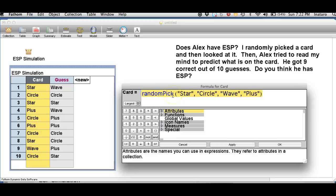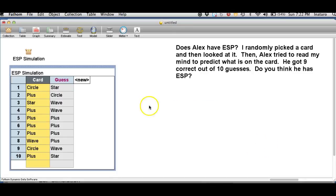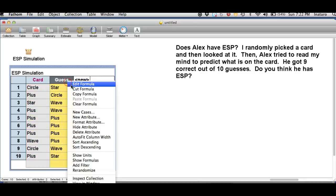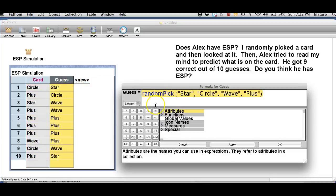Let's take a look at the formula for these two attributes. Notice under the card attribute we have the command random pick and Fathom is randomly picking either a star, circle, wave, or plus. This also happens with the guess attribute, there's a random pick of star, circle, wave, or plus.